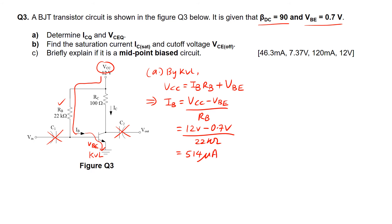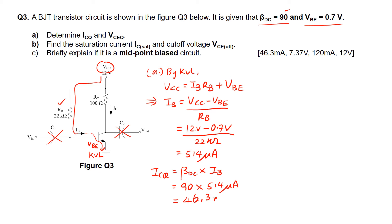We use this value of IB to calculate ICQ: ICQ equals beta_DC times IB. Beta_DC is given as 90, so it's 90 multiplied by 514 microamperes. ICQ therefore equals 46.3 milliamperes.